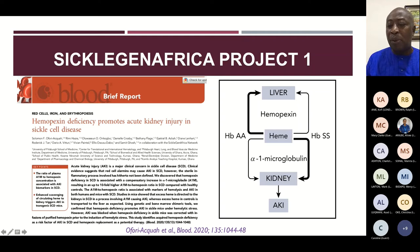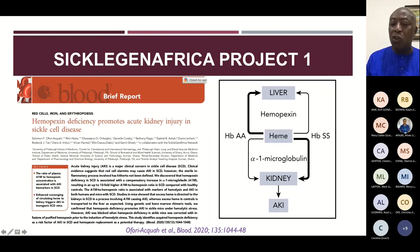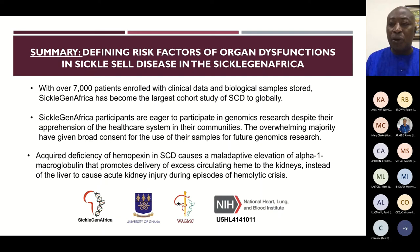In summary: in the event of excess heme in AA mice, most heme goes to the liver through hemopexin with very little going to the kidney. Whereas for the SS mouse, most of that heme goes to the kidney causing acute kidney injury. This is a good study so far.